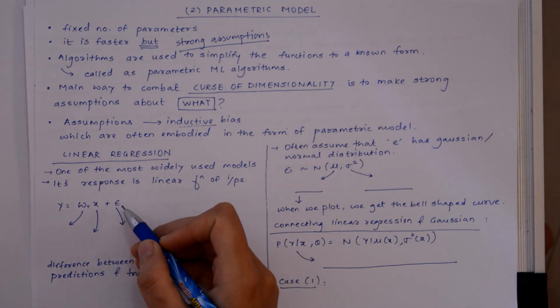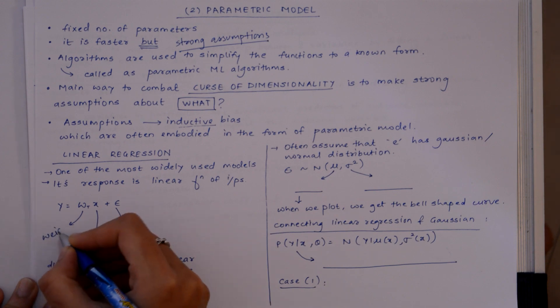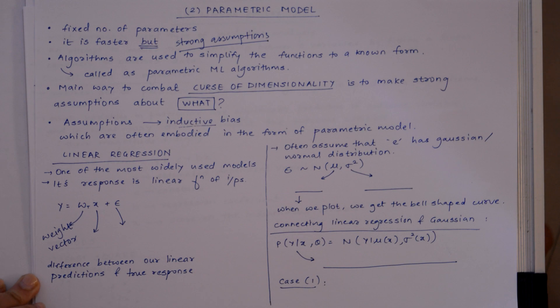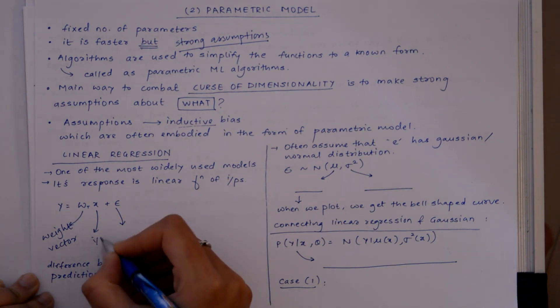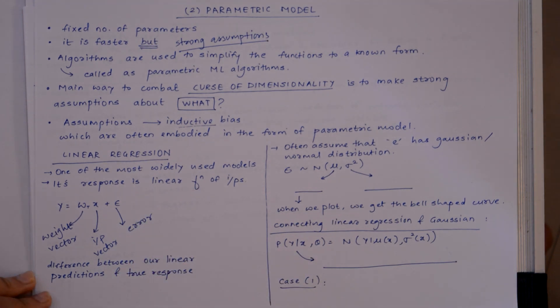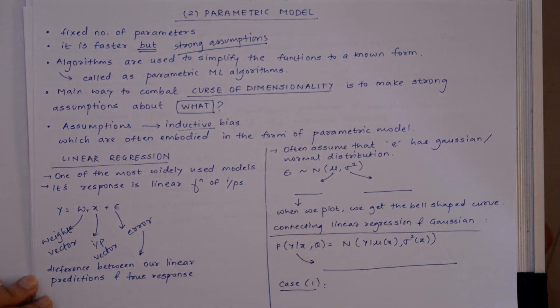Its linear response can be written as y equals W^T x plus epsilon, where W^T is the weight vector, x is the input vector, and this is error. What is error in this case?